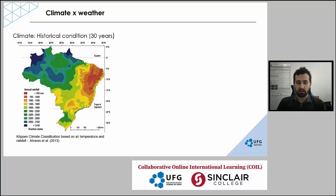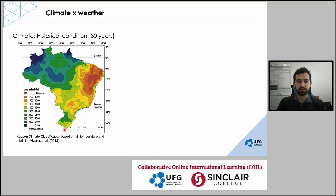To start, I'd like to bring this map of Brazil showing how much rainfall we receive in a year, averaged over 30 years. So what is climate? Climate is a historical condition for a specific variable. Here we have an example for rainfall, where this average was obtained from 30 years of observed data. When you talk about climate, we are talking about a long period over which you measure weather and collect that information.